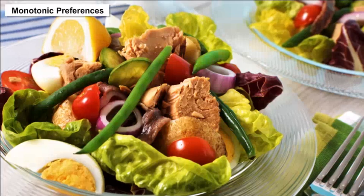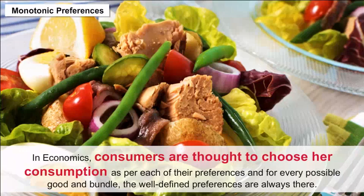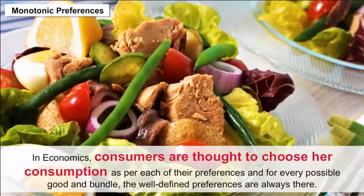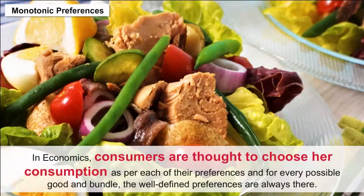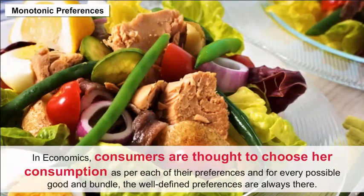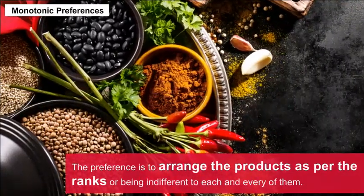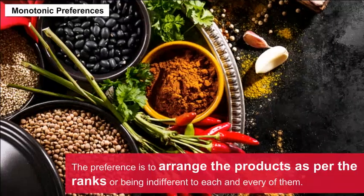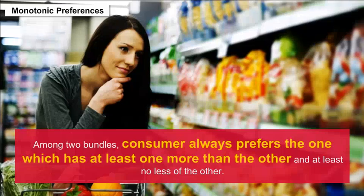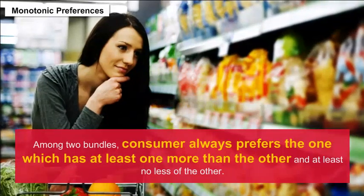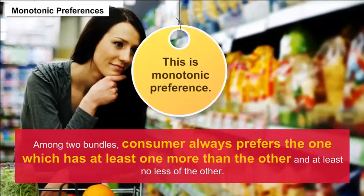Preferences of the consumer: It is assumed that the consumer chooses her consumption bundle on the basis of her tastes and preferences over the bundles in the budget set. It is generally assumed that the consumer has well-defined preferences over all possible bundles and can compare any two bundles. Monotonic preferences: consumers are thought to choose consumption as per their preferences for every possible good and bundle. The well-defined preference ranks products or remains indifferent between them. Among two bundles, a consumer always prefers the one with at least one more unit and at least no less of the other — this is monotonic preference.